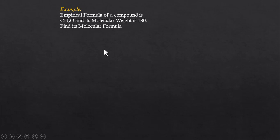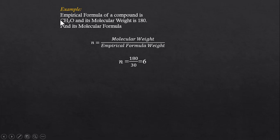There is a simple relationship: n equals molecular weight divided by empirical formula weight. We are given a molecular weight of 180. The empirical formula weight can be calculated using the empirical formula, and n — the ratio between molecular weight and empirical formula weight — comes out to be 6.